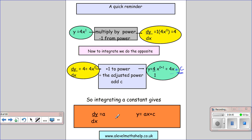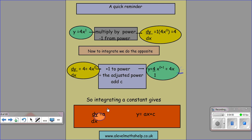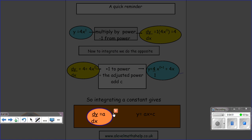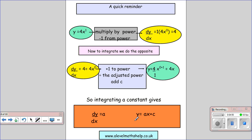So if our differentiated function is a constant — dy/dx equals a, some number — the answer is y equals a times x plus c. So whenever you just see a number and you integrate it, it becomes ax plus c.